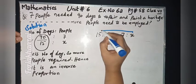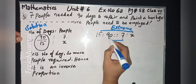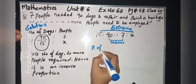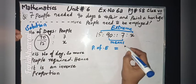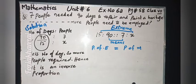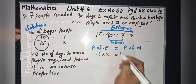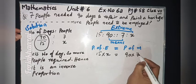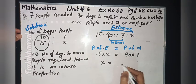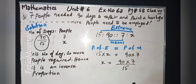The second part we copy as it is: 7 is to X. Now apply the rule — product of extremes equals product of means. The extremes are 15 and X, and the means are 90 and 7. So 15 × X = 90 × 7. Therefore X equals 90 × 7 upon 15.